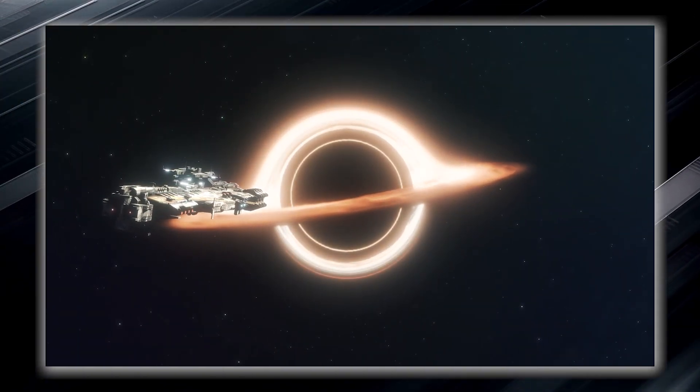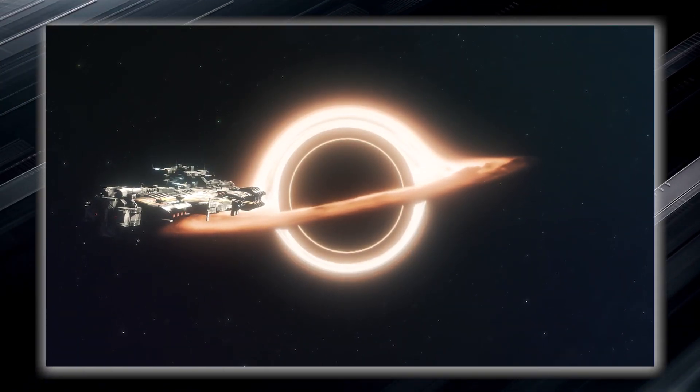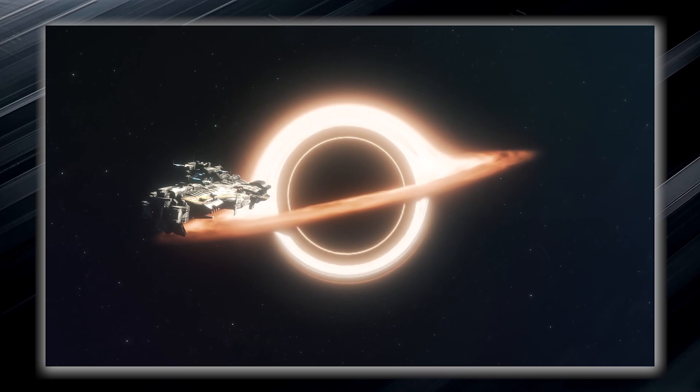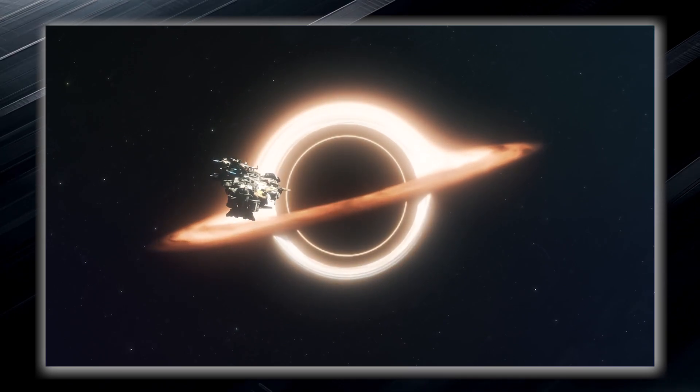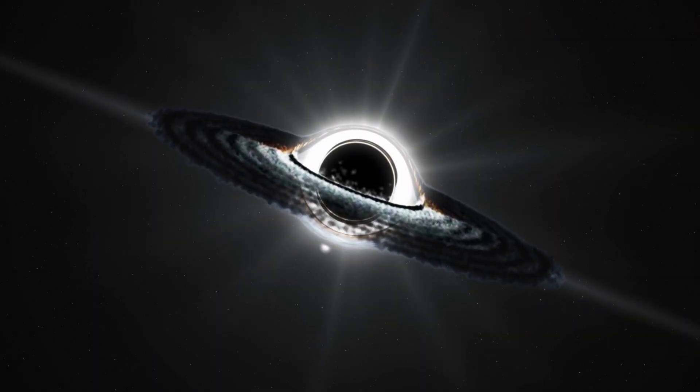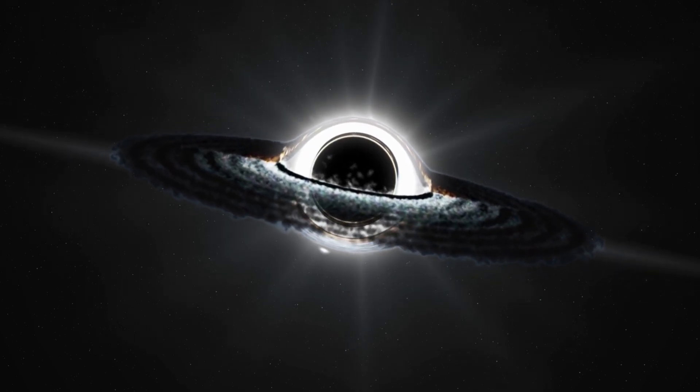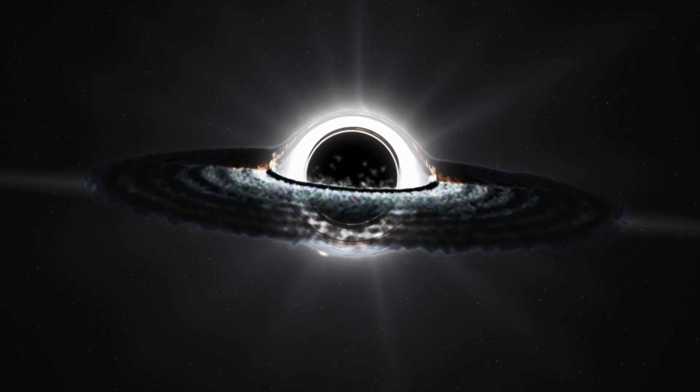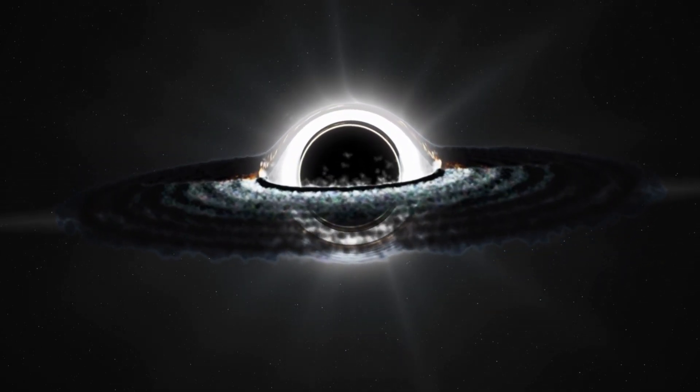Once something, such as an unfortunate spacecraft or even light, crosses its boundary, it can never escape the clutches of the black hole. The event horizon forms an invisible force field that holds everything within it, including light, which is normally considered the fastest entity in the universe.